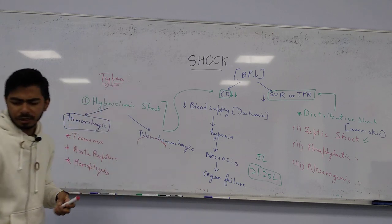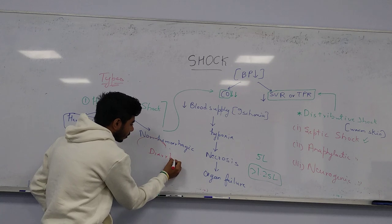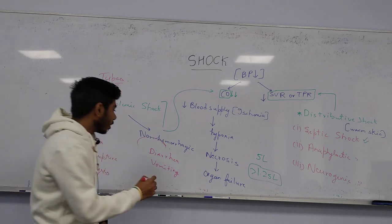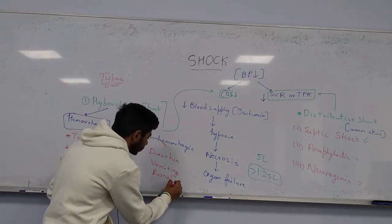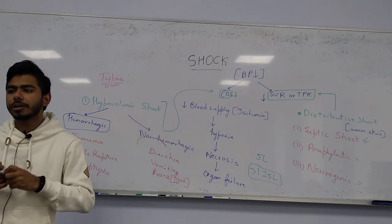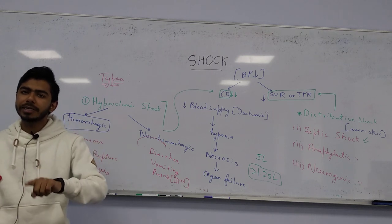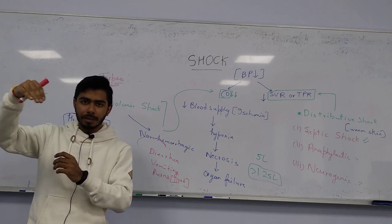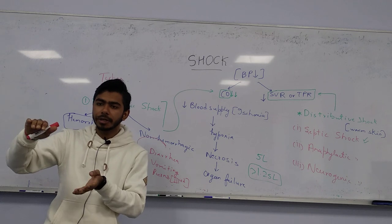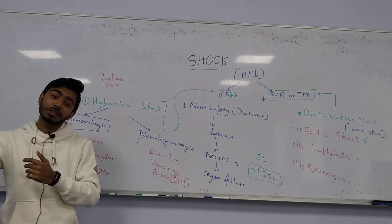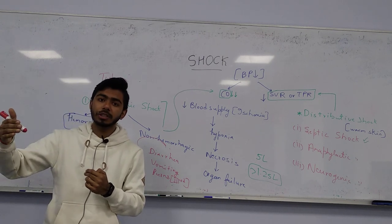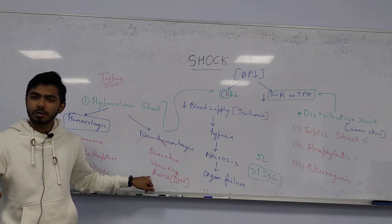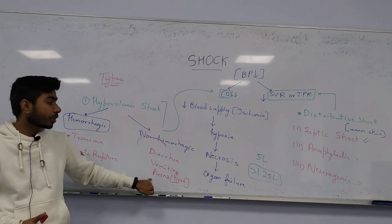Non-hemorrhagic causes of hypovolemic shock include diarrhea, vomiting, and burns — especially third-degree burns. In third-degree burns, which extend to muscles (and possibly bone in fourth-degree), dehydration is very common. IV fluids must be given to prevent hypovolemic shock in these patients.